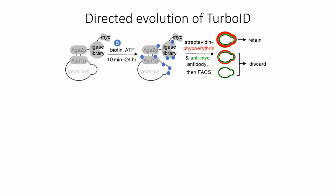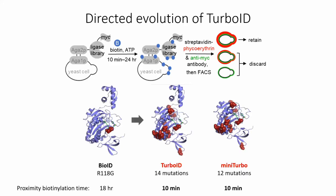To perform the directed evolution, we generated a library of ligase mutants and displayed them on the surface of yeast, where we carried out the labeling under various conditions and then used flow cytometry to separate out mutants with high activity-to-expression ratios from those with lower ones. Using that selection platform, we generated two mutants: one with 14 mutations that we call TurboID, and a second mutant, mini-turbo, that's smaller and comes with a few trade-offs compared to TurboID.